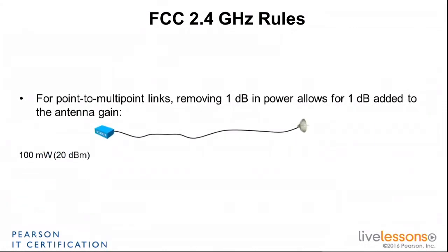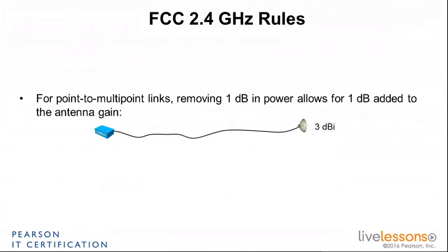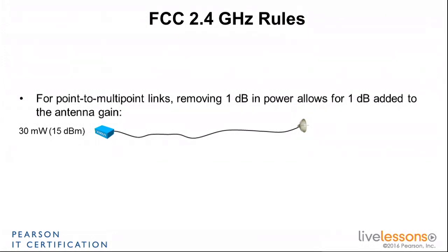So that's pretty simple. Suppose you have a 20 dBm system on your access point sending signal out to the antenna, and suppose the antenna gain is 3 dBi. That rule says if you decrease your transmitter by 1 dB — say you go down to 19 dBm, and then decrease even further by a total of 5 dB — those 5 dBs removed at the transmitter can be gained at the antenna. So instead of 3 dBi, your antenna can now be 5 dBi more, which is 8 dBi. That's the one-to-one rule.